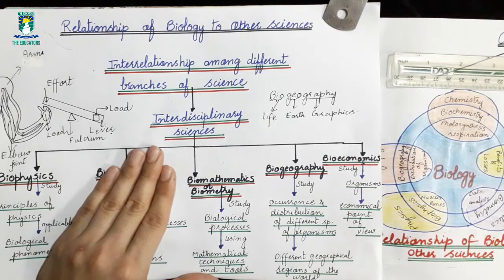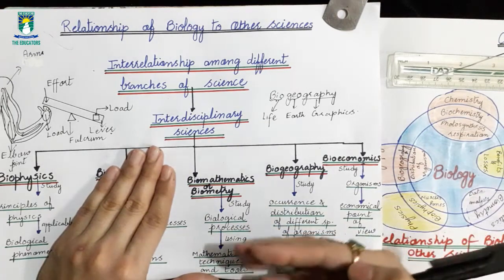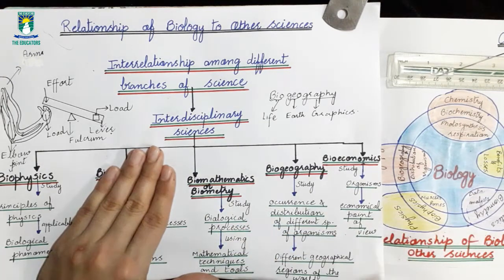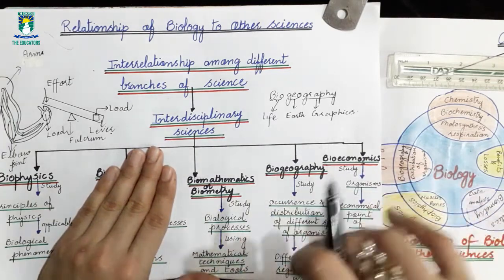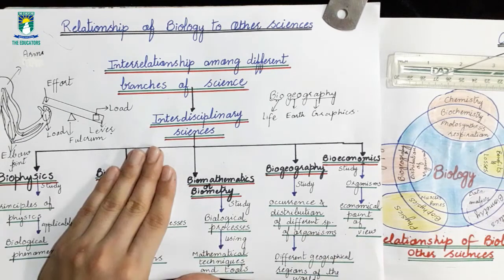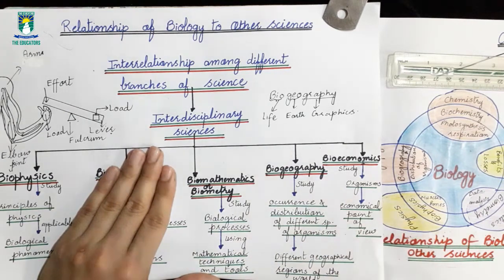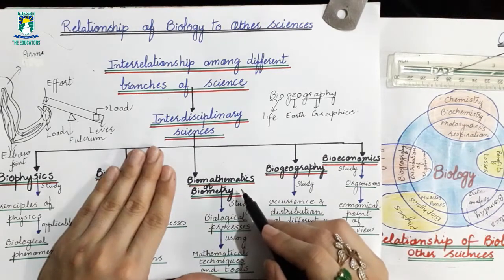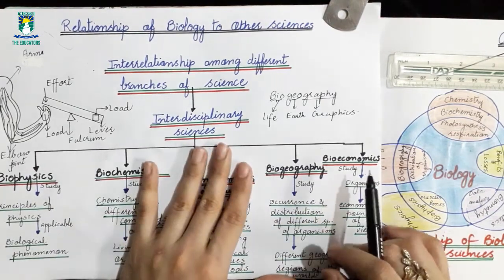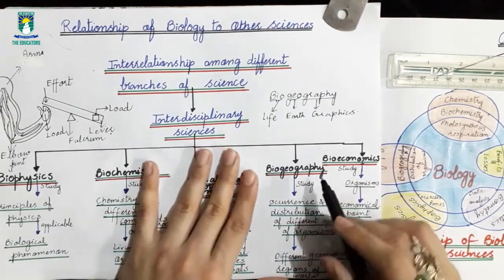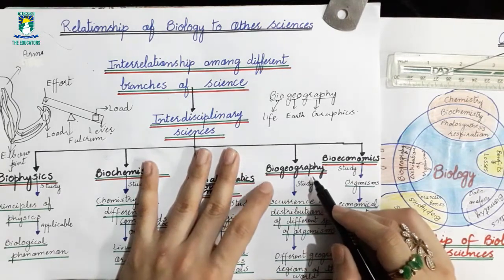That is why we say that Biomathematics is related to mathematics. Now we will discuss our next interdisciplinary science, which is Biogeography.